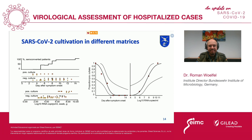We also tried to cultivate the virus and were able to get positive cultures from sputum samples and from throat swabs, but only until day eight after onset of disease. You see the positive cultures from throat and sputum samples. At the same time, when patients developed antibody production, the number of negative cultures increased and we were not able to identify any positive in cell culture anymore.